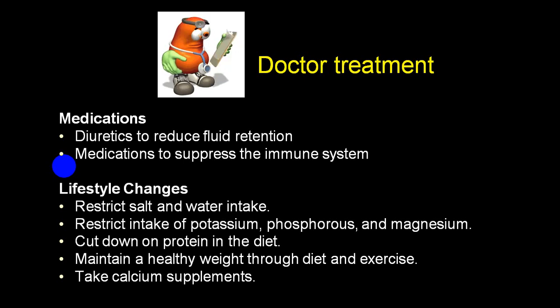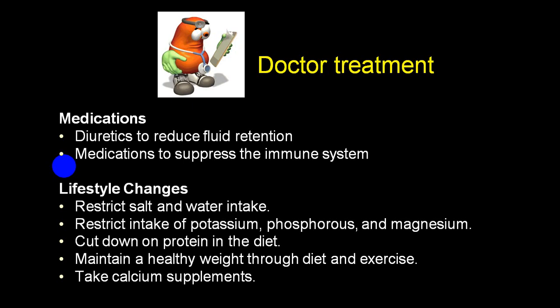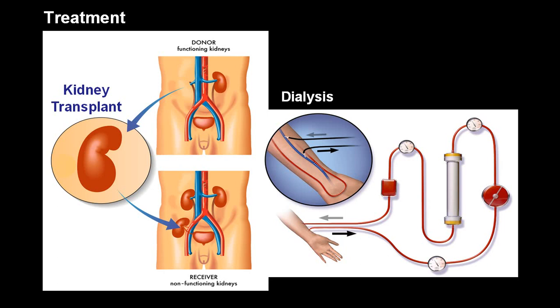Phosphorus and magnesium are also restricted in the diet. Protein is reduced because excess protein results in urea formation, which worsens the condition. Maintaining a healthy weight through diet and exercise is important. Calcium supplements are necessary due to invariable hypocalcemia. In the initial asymptomatic hypertension stage, blood pressure is controlled with diuretics and calcium channel blockers. If that does not work, additional drug groups may be added.